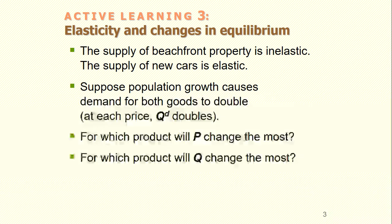The supply of beachfront property is inelastic; the supply of new cars is elastic. Suppose population growth causes demand for both goods to double at each price — quantity demanded doubles. For which product will price change the most, and for which product will quantity change the most?